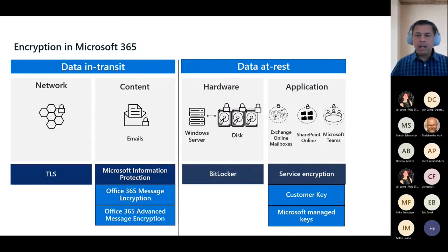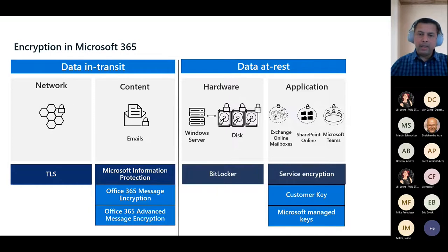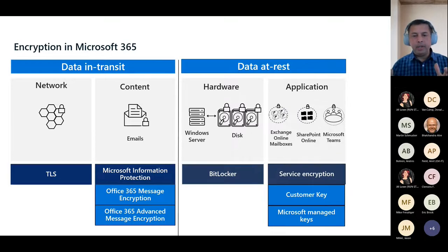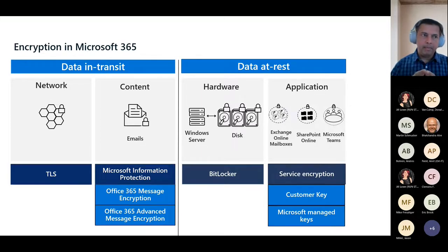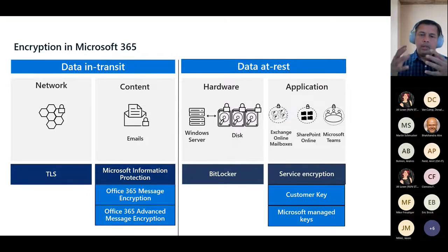When we talk about data at rest, that's when your customer data is actually residing more permanently on our data centers. For certain workloads like Exchange Online in particular, each of the backend servers are BitLocker enabled — so there is encryption that happens at the volume level, encrypting the content using BitLocker. On top of that, we have service encryption, where your application data such as Exchange Online, SharePoint Online, and Microsoft Teams — and in future additional workloads — get encrypted using a different set of keys.